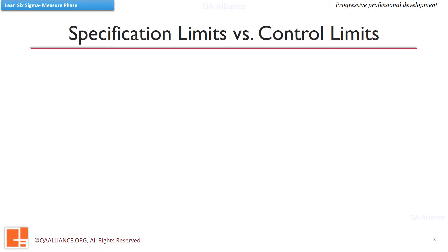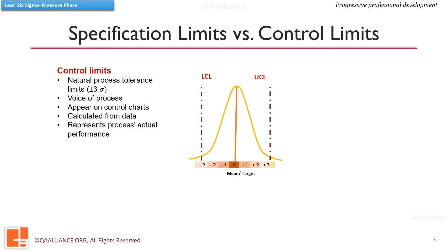We need to understand the terms specification limits and control limits to understand process stability and capability. In this graph, we can see a normally distributed process. The plus minus three sigma limits of this process are known as natural process tolerance limits or the control limits. These are calculated limits based on the data points of the process. We can say that these limits are the voice of the process and they represent process or actual performance.